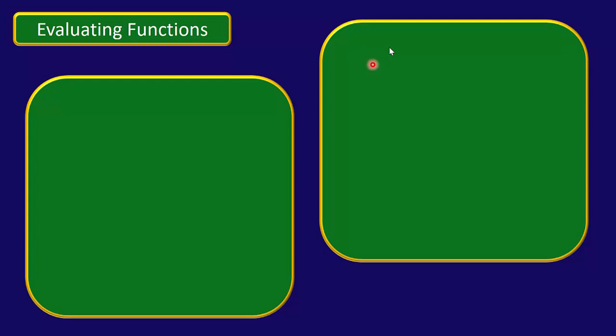Let's talk about evaluating functions. In other words, let's suppose that we're given a function — a mathematical formula for a rule of correspondence — and we want to put in some values of x, and it spits out values of the function. Let's suppose we have something like this.